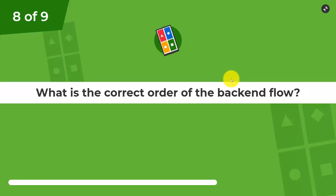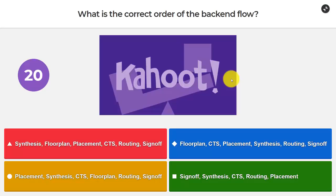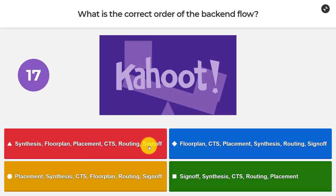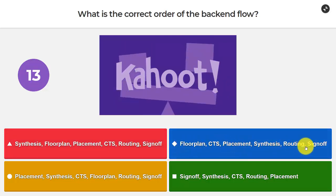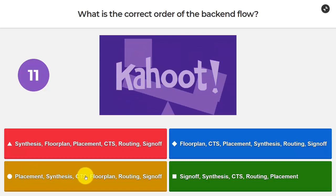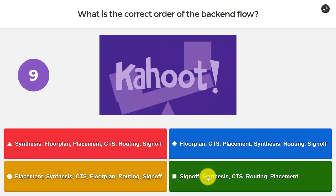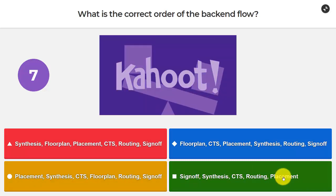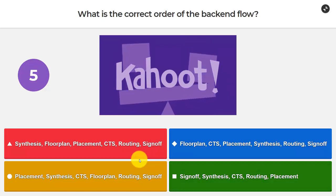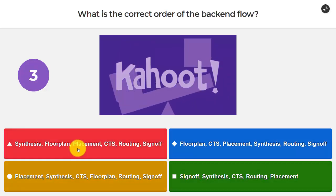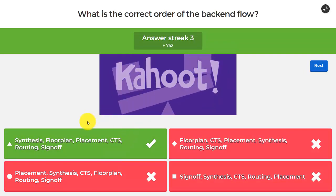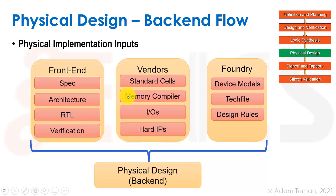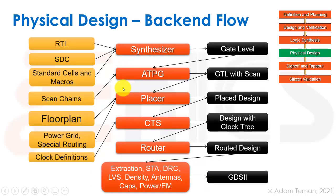What is the correct order of the back-end flow? The options are: synthesis, floor plan, placement, CTS, routing, sign off — or floor plan, synthesis, placement, synthesis, routing, sign off — or placement, synthesis, CTS, floor plan, routing, sign off — or sign off, synthesis, CTS, routing, placement. I think we go with the first one. I hope I'm right — I didn't have much time to check, but yes. Let's go back to our slides and see our whole back-end flow.